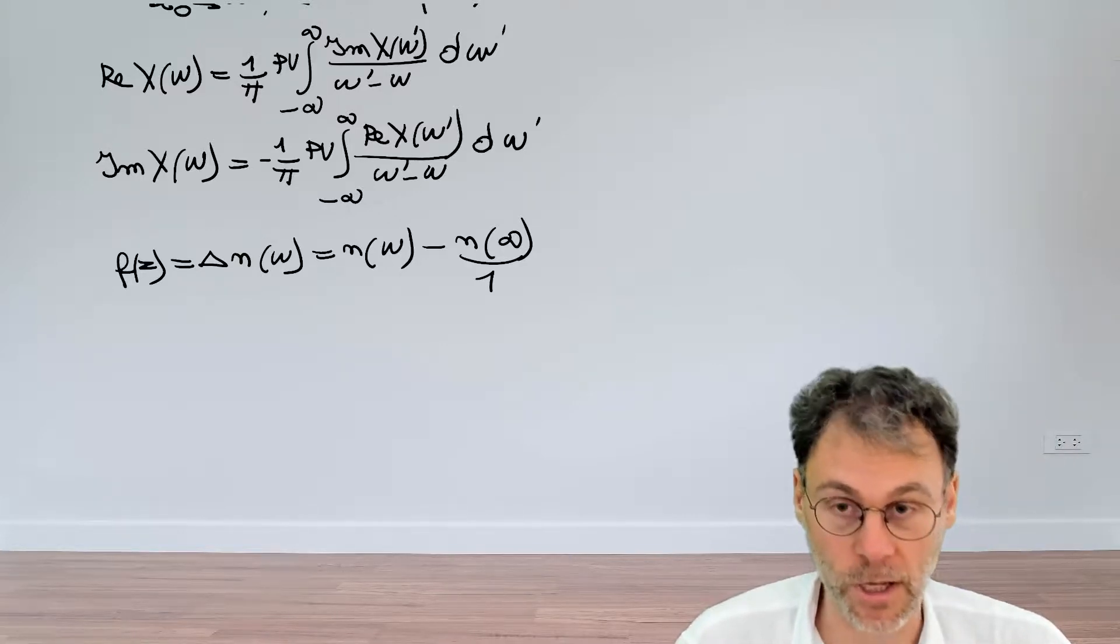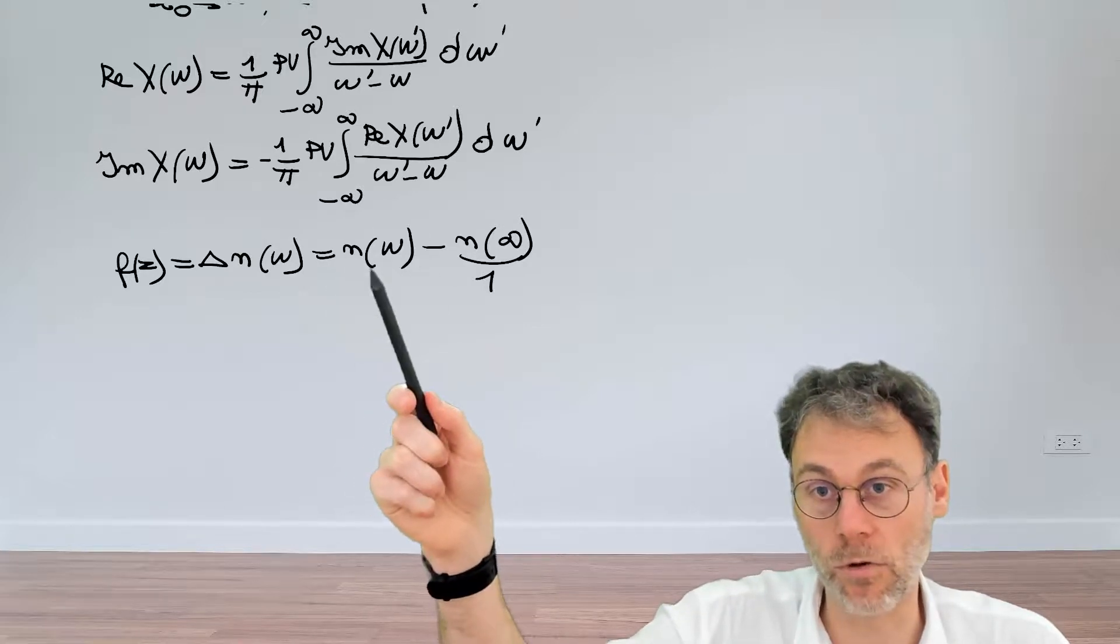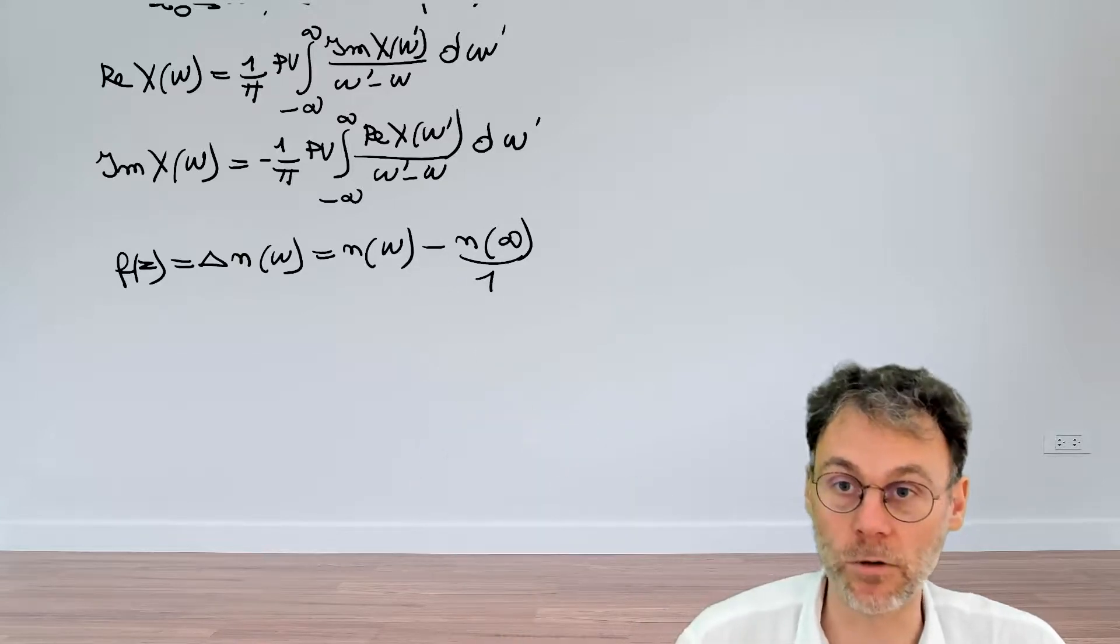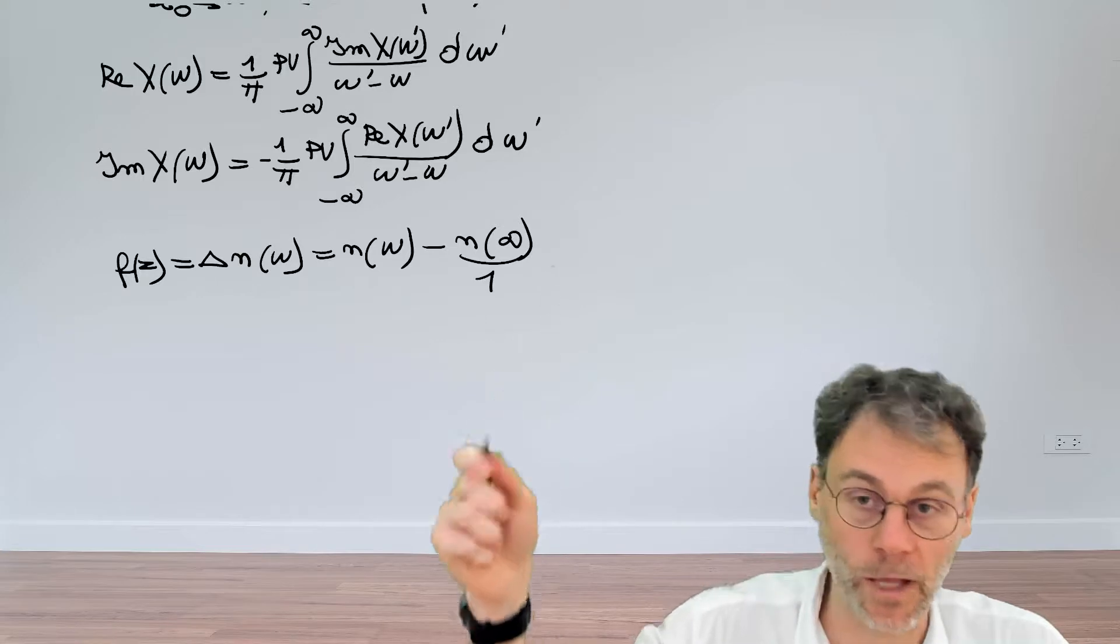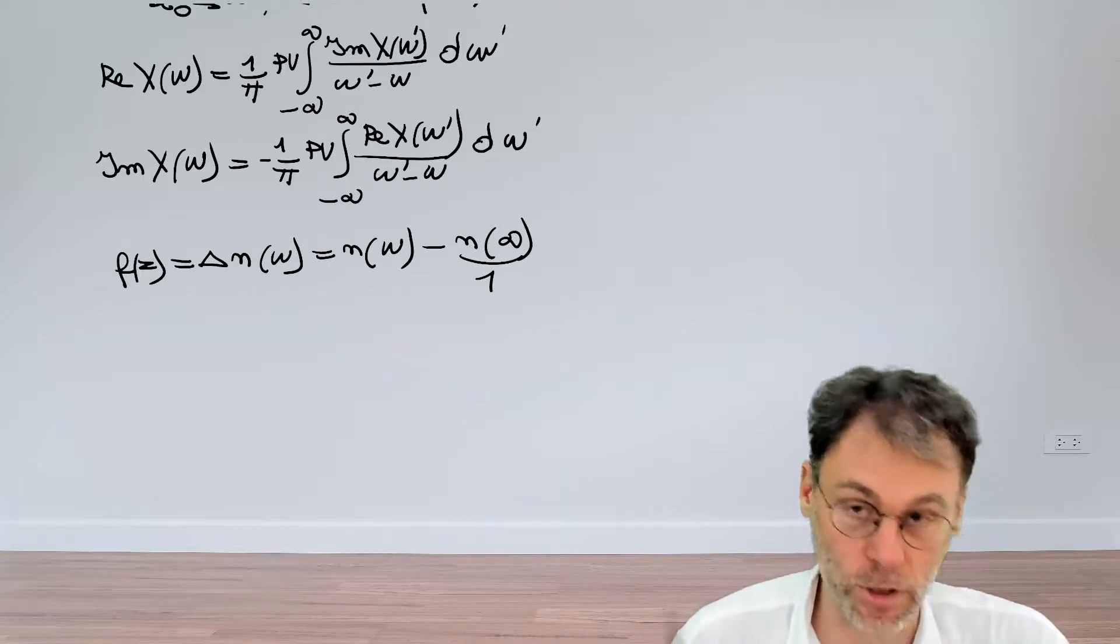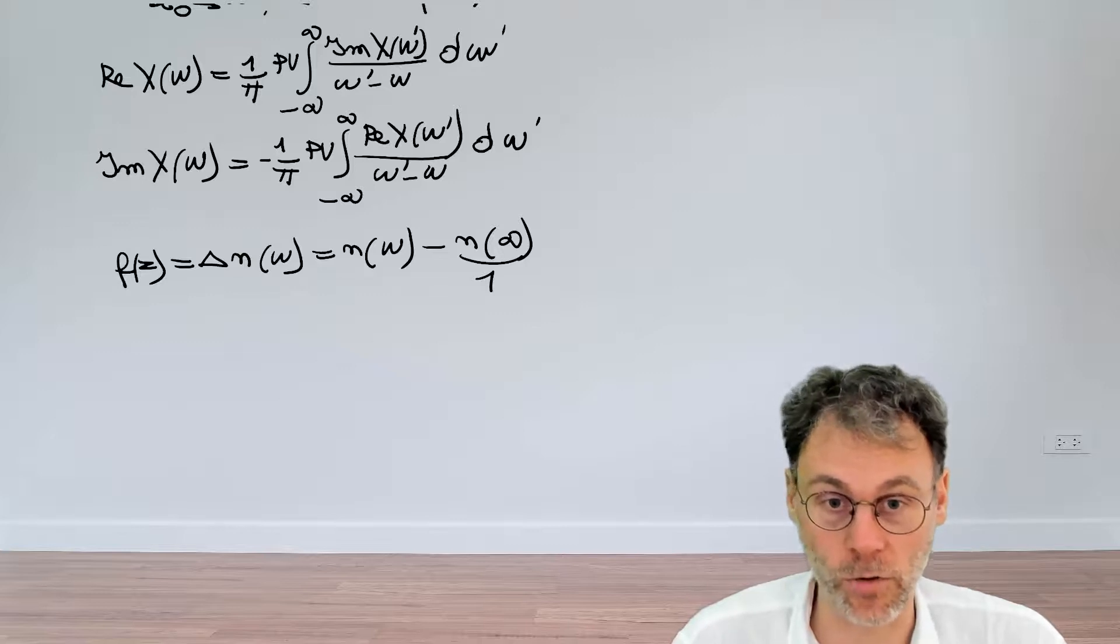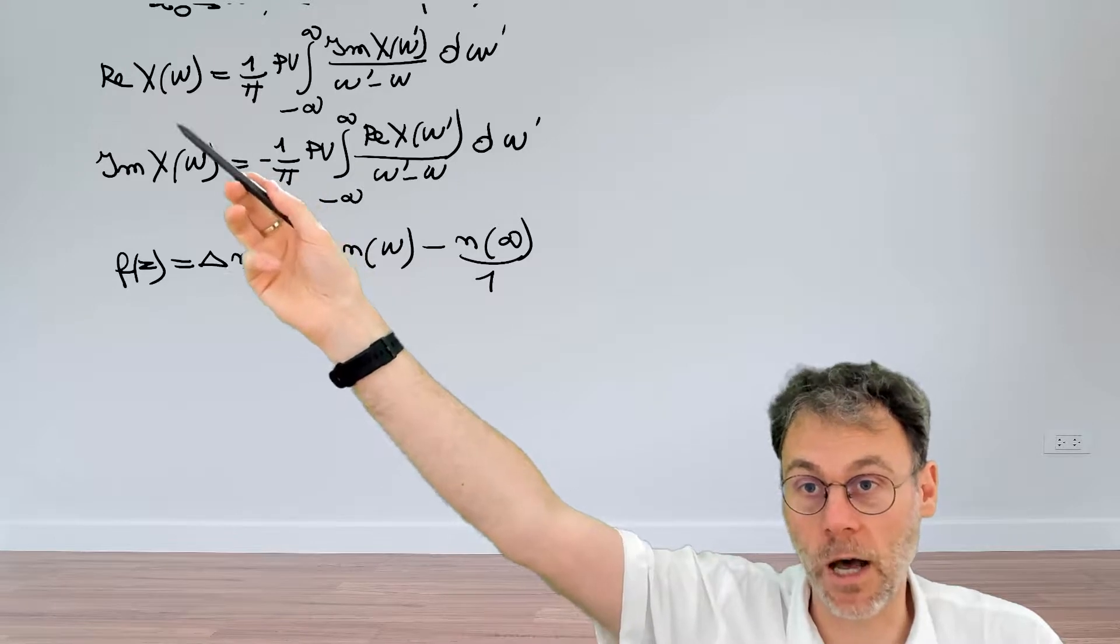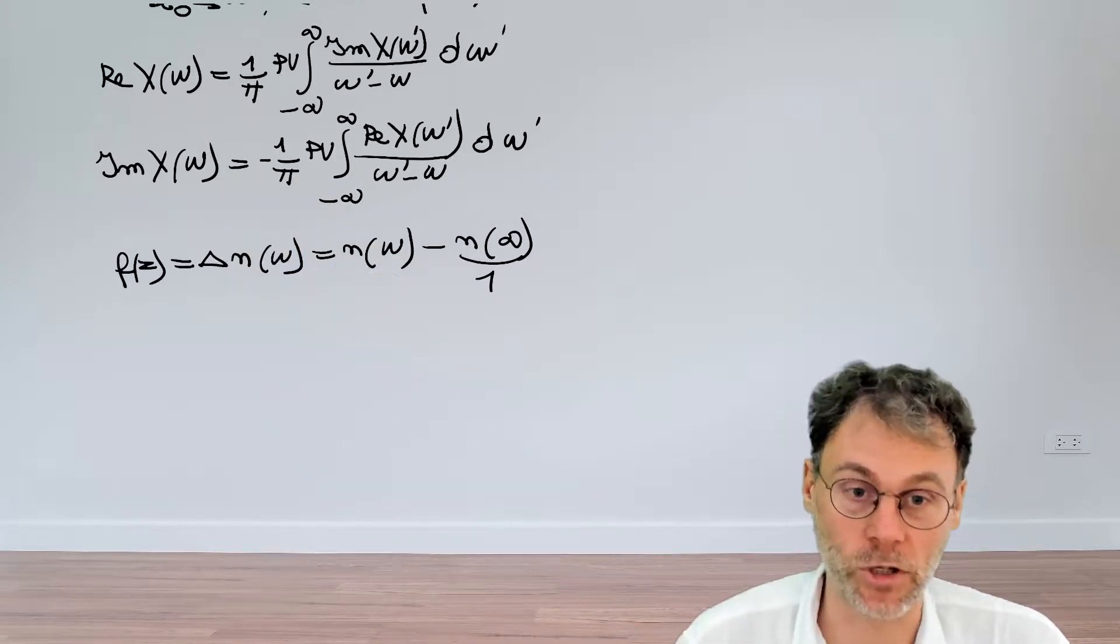Because again in the limits of omega going towards infinity this will also obviously reduce to one and therefore this will be zero. So rather than having n squared minus one we just have n minus one, and that's just as valid a function in order to apply the Kramers-Kronig dispersion relationships. So in these equations up here you can also replace chi by delta n and then also have valid relationships.